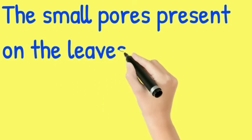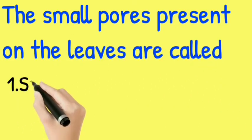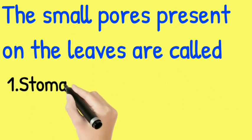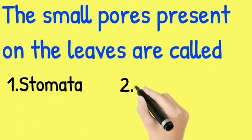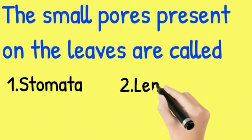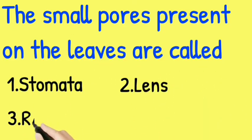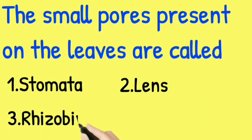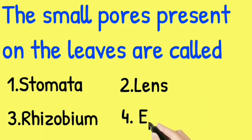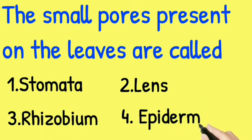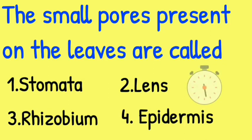The small pores present on the leaves are called — the options are: Stomata, Lens, Rhizobium, and Epidermis. Your time starts now!